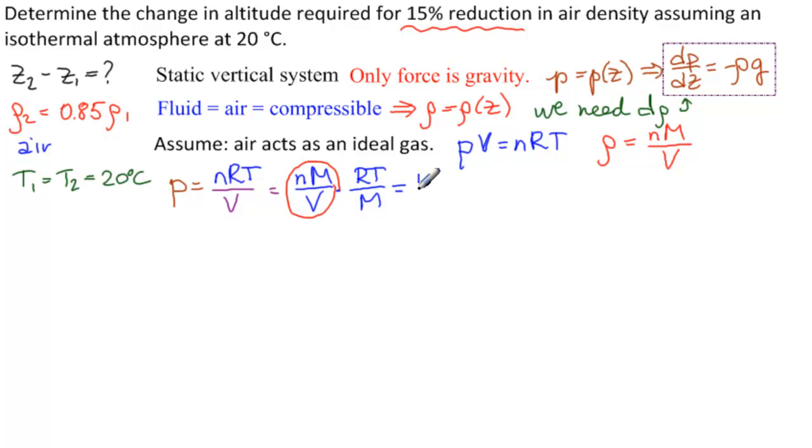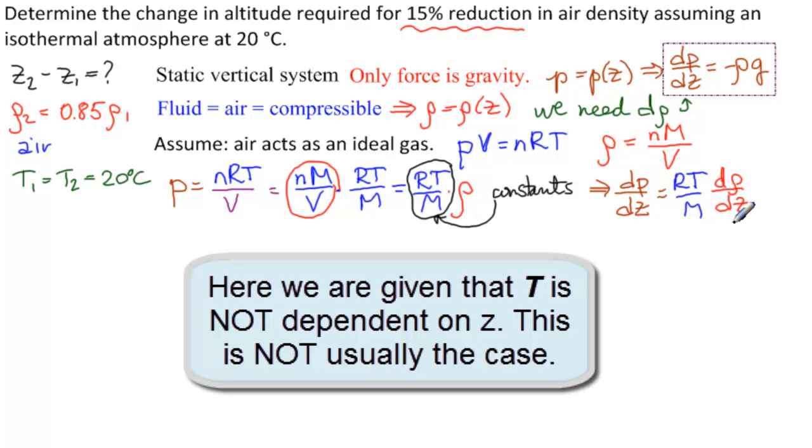So we'll write RT over M times rho. So notice that P is now a function of rho. The critical part is that all of these are constants with respect to Z. And that means when we take the derivative dP dz, we will simply have RT over M d rho dz. So dP dz is equal to RT over M d rho dz. Now, this is critical that many times T depends on Z, but in our case, we were given that we have an isothermal atmosphere so T is not dependent on Z.